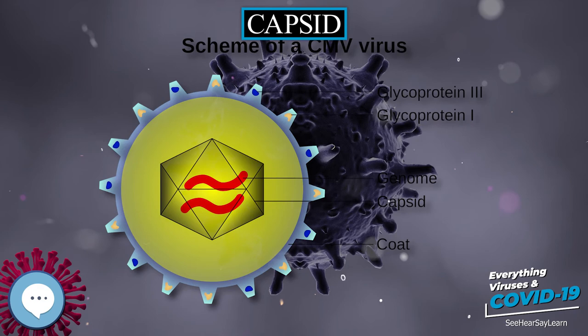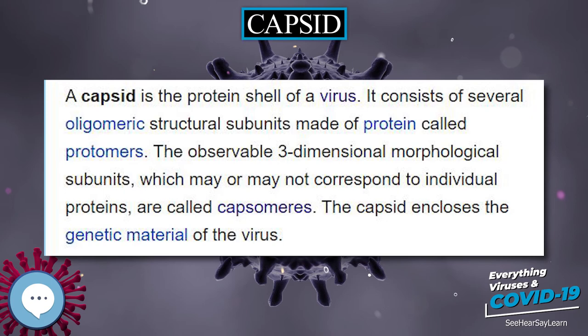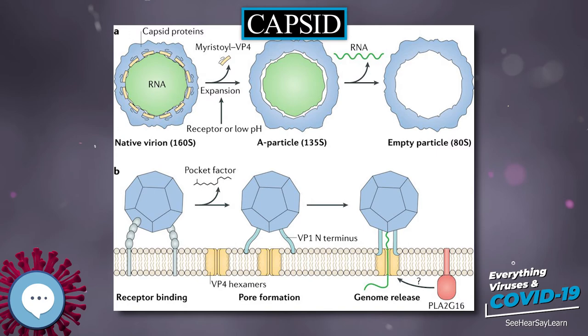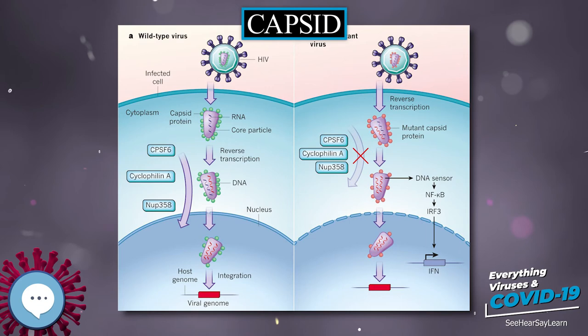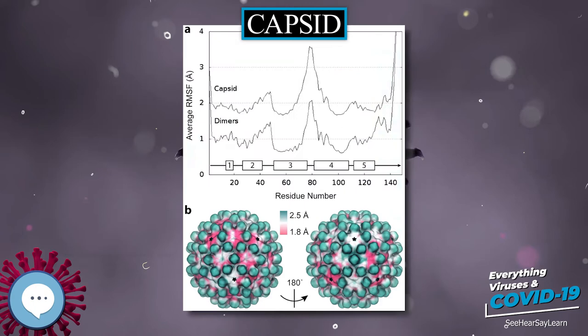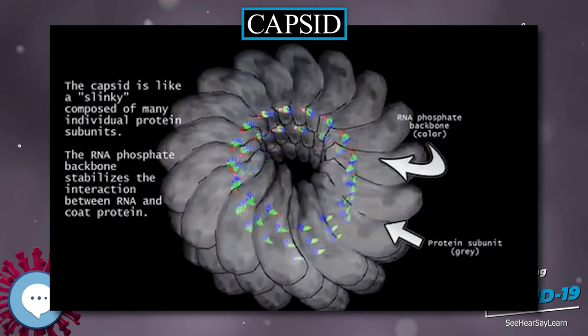Prolate. An elongated icosahedron is a common shape for the heads of bacteriophages. Such a structure is composed of a cylinder with a cap at either end. The cylinder is composed of ten elongated triangular faces. The Q number, or T-mid, which can be any positive integer, specifies the number of triangles composed of asymmetric subunits that make up the ten triangles of the cylinder. The caps are classified by the T, or T-end, number.